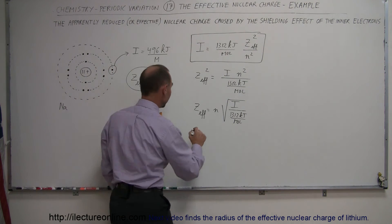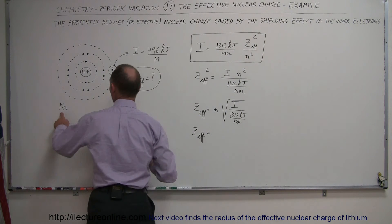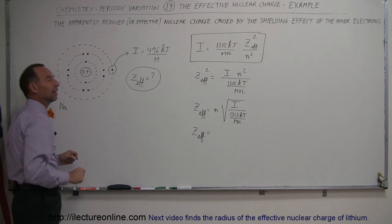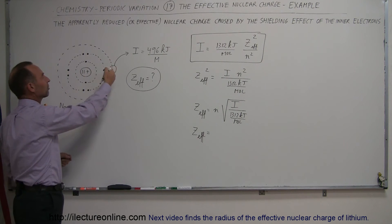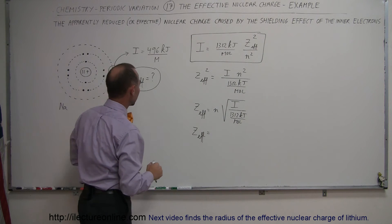So in this particular case, let's figure out what Z-effective is. So Z-effective for sodium, taking the final electron or the outermost electron away from sodium. What is the Z-effective for this particular electron?